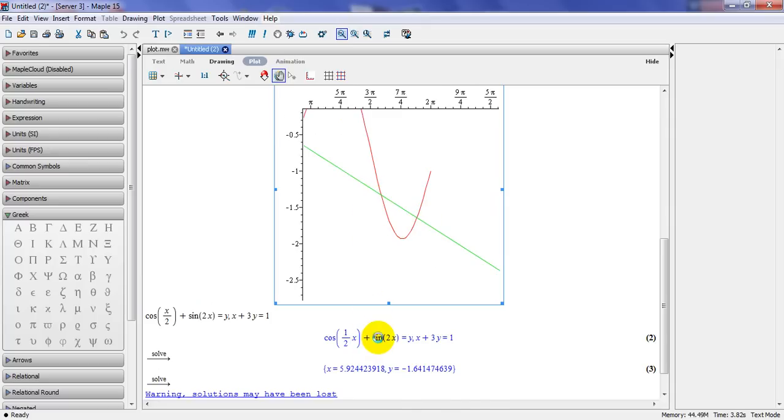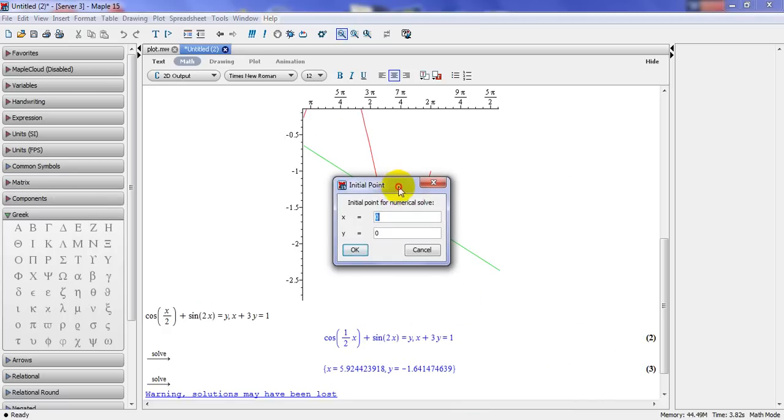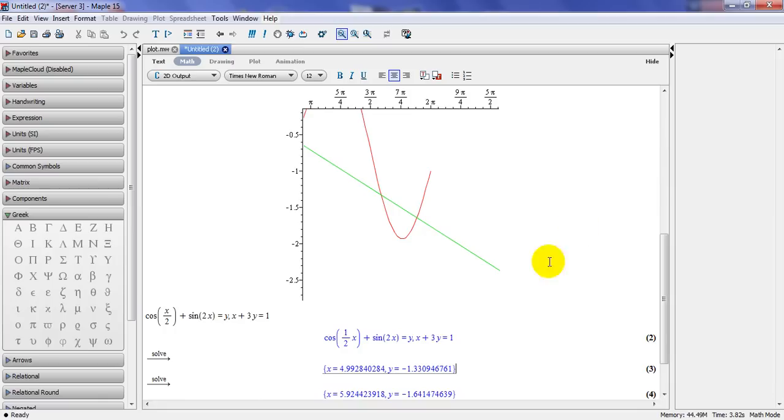So there is another very handy feature and it's called, you go to solve, numerically solve from a point. And that point, I approximately put this point, let's say 5 and minus 1.5. And as you can see, this answer is given.